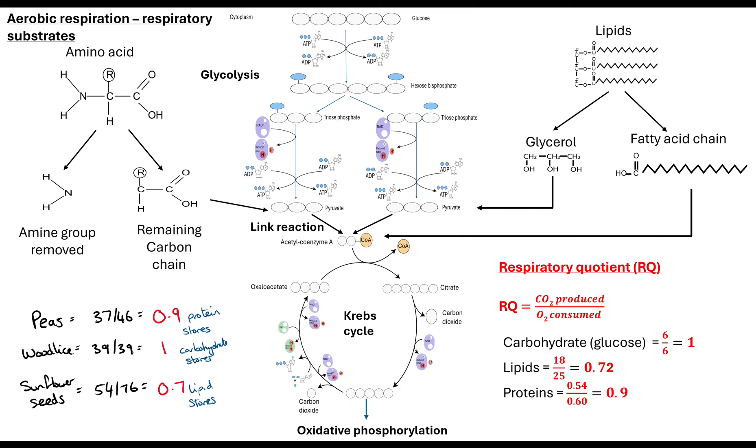So as you can see on the left hand side of my diagram, I have different examples. Peas, woodlice, sunflower seeds and some numbers there which tell you how much oxygen was consumed and how much carbon dioxide was produced. But how did we get these numbers? What can we use that would allow us to be able to calculate the RQ?